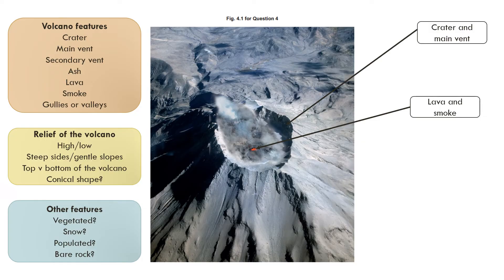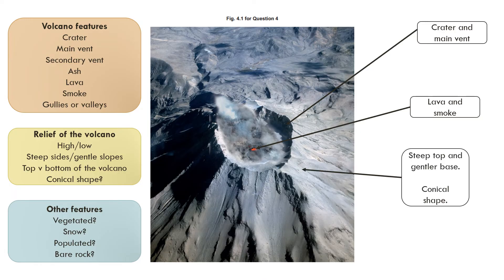If we look at the relief of the volcano we can also see whether it's particularly high or low, whether the sides are steep or gentle, what the top of the volcano looks like versus the bottom, and whether it's conical in shape. We can see there's certainly a steep top and a gentler base — it's definitely conical in shape, as most stratovolcanoes are.